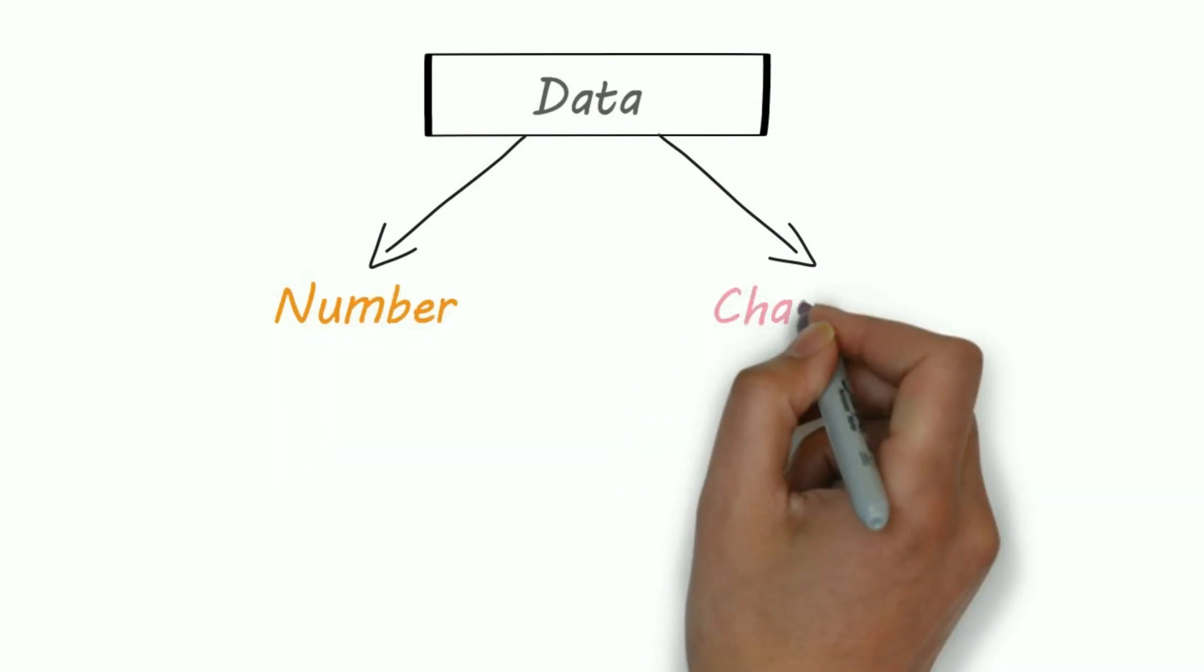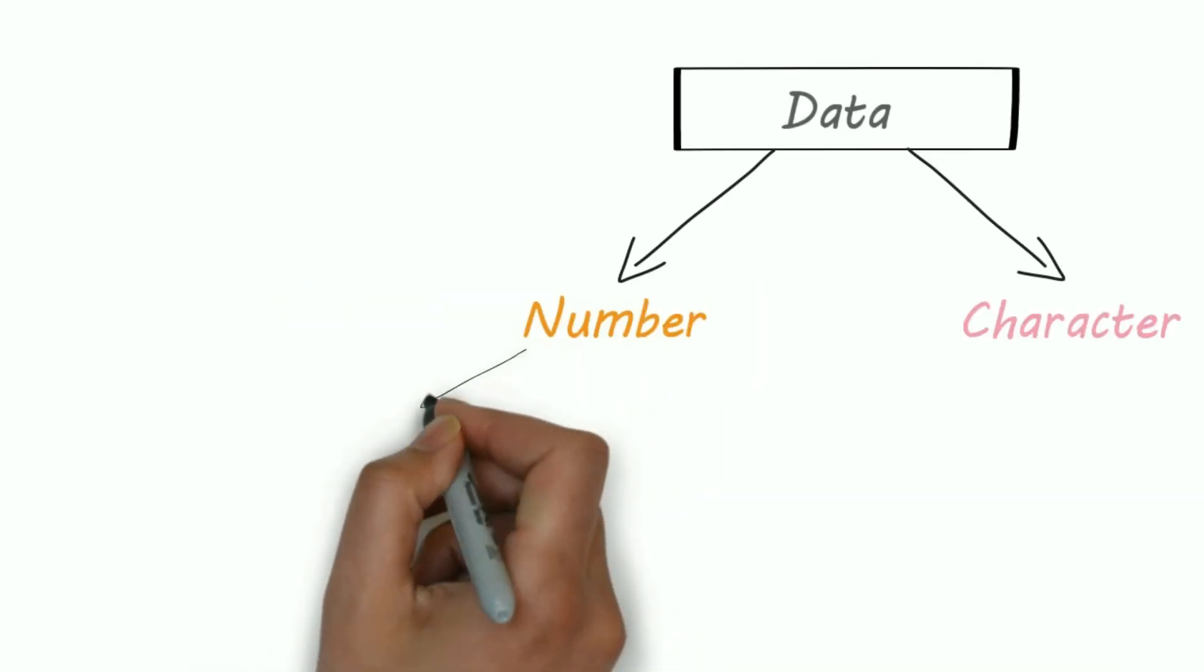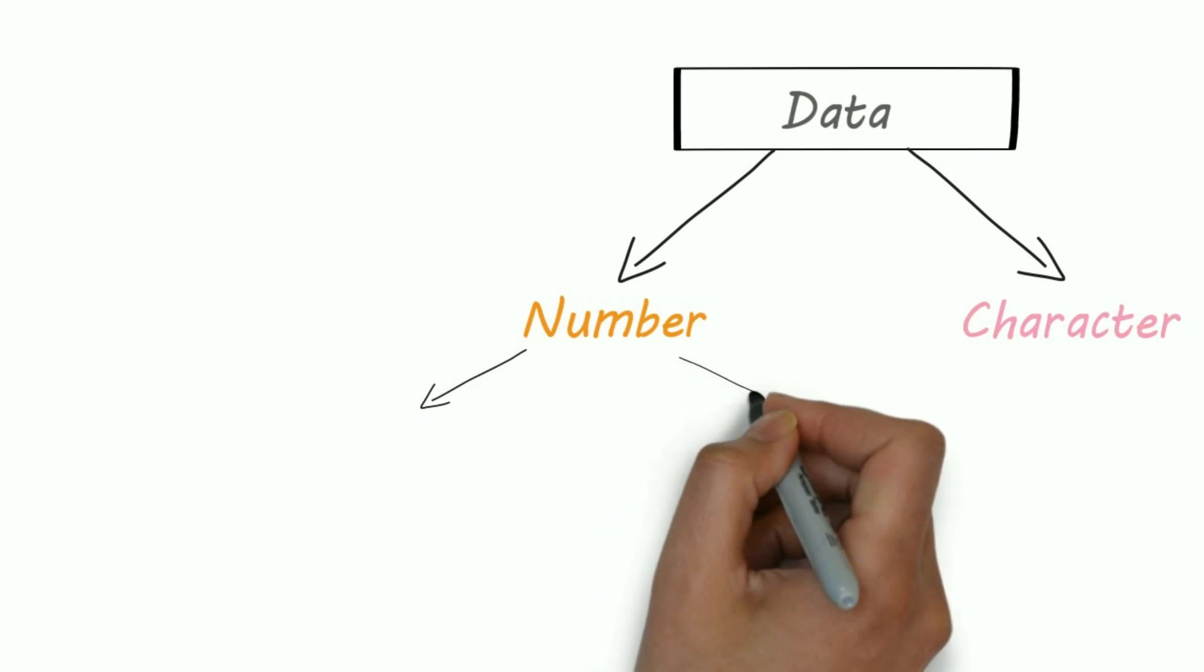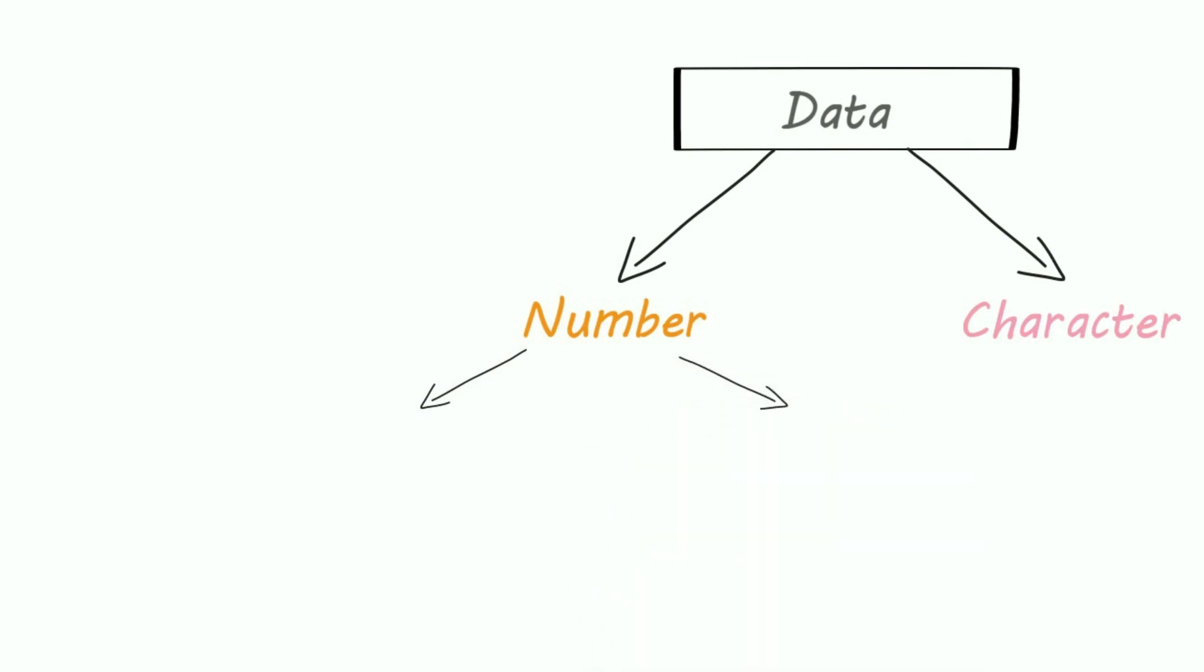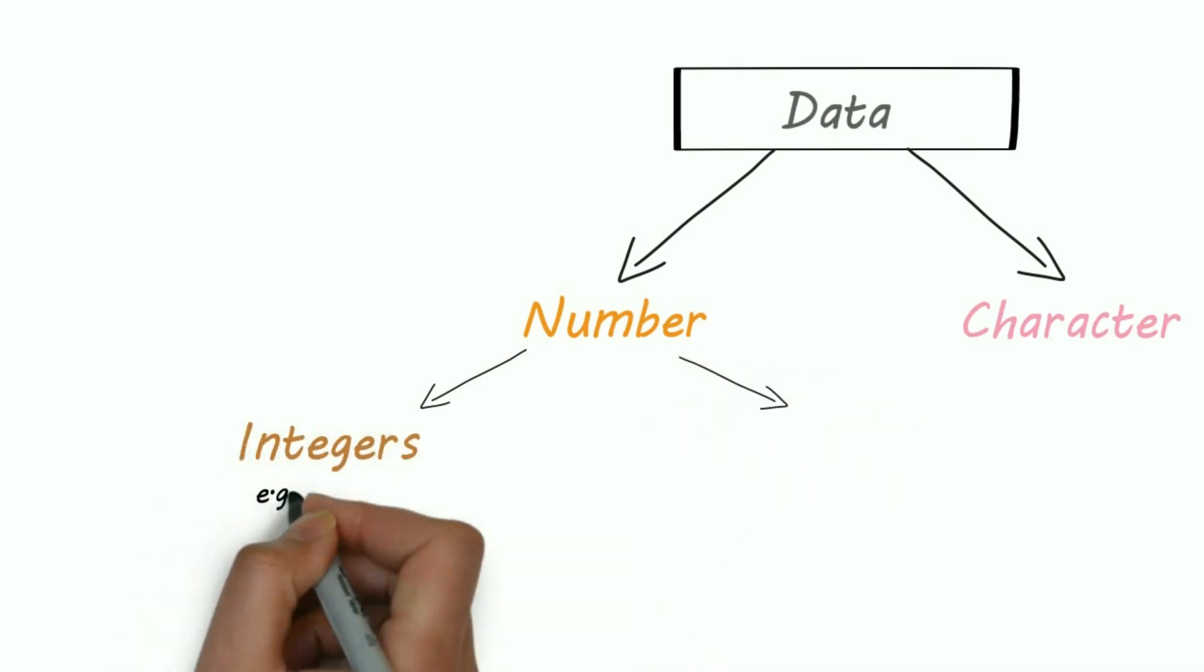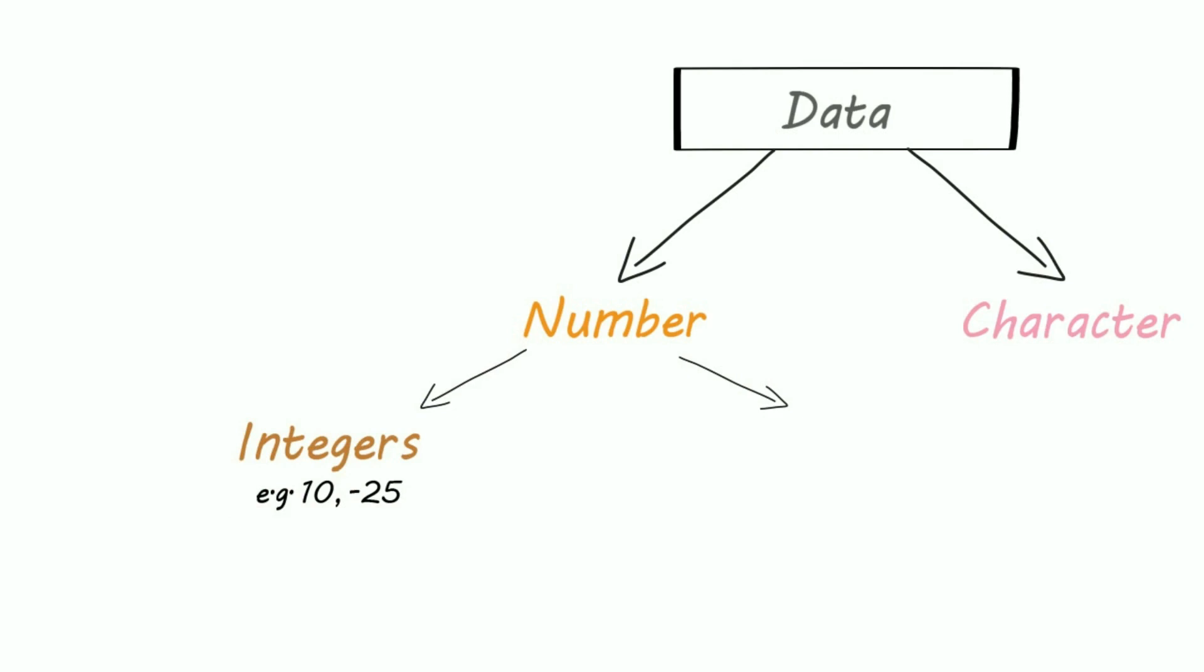We mostly take numbers or characters. In numbers we have two types: integers or decimals, or we can say floating points.